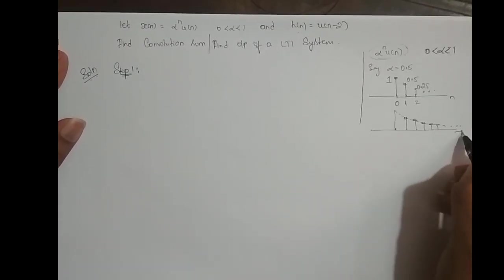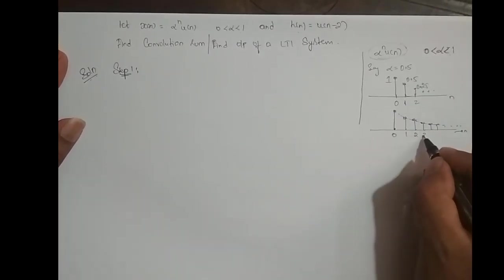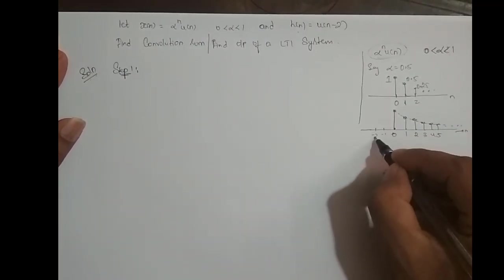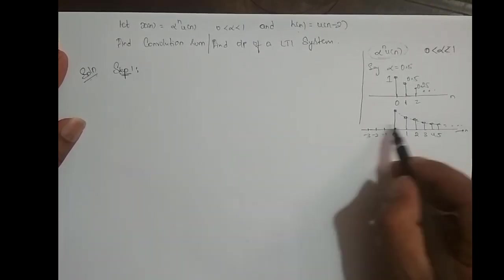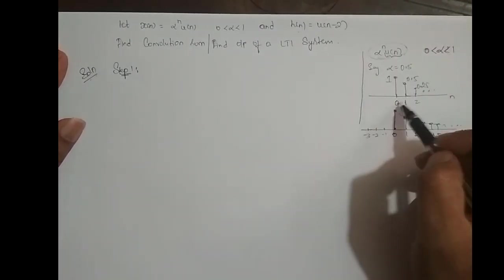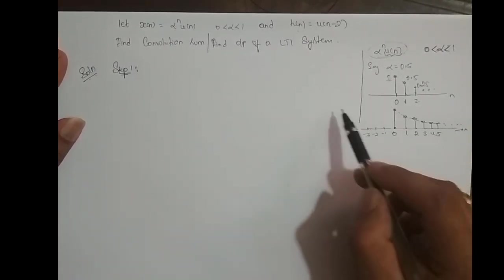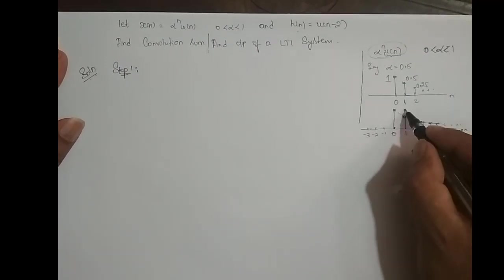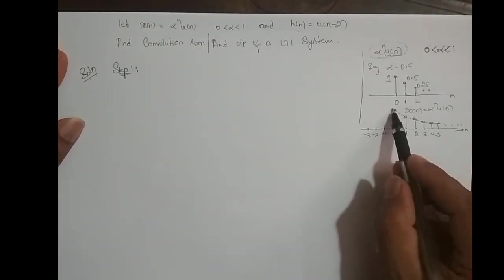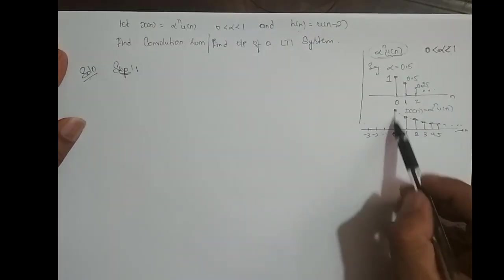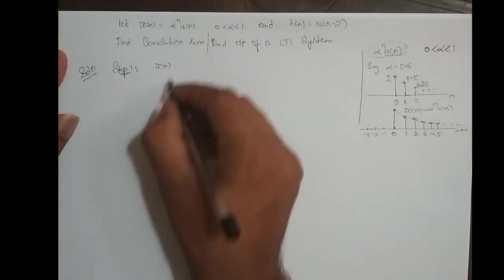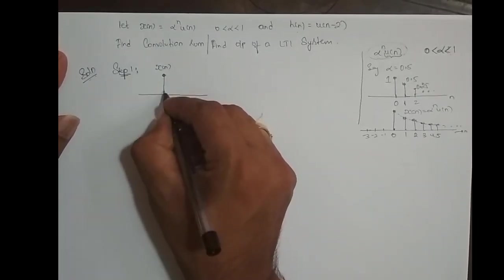The signal goes till infinity: 0, 1, 2, 3, 4, 5 and so on. We do not have samples at n = -1, -2, -3 and so on because of the unit step function, which is defined only from n = 0 to infinity. Therefore there are no samples on the negative side of n. This is our x(n) = α^n · u(n), which is exponentially decreasing.